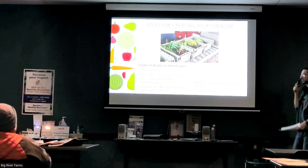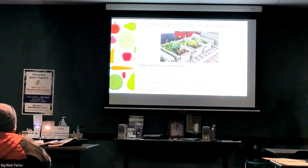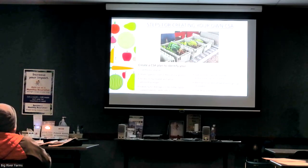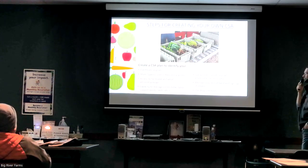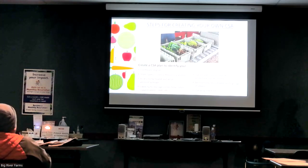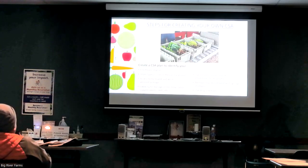Consider share types, sizes, delivery frequency, and prices. The most common model is two share sizes — small and large, also called half and full shares. Starting your first year with just one share type makes it more manageable, expanding in future years. Share types may include vegetables, fruit shares, or value-added products as standalone or add-on options. Delivery can be weekly, bi-weekly, or monthly depending on the product.